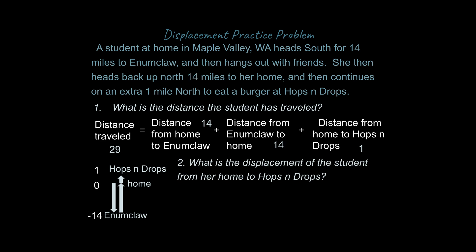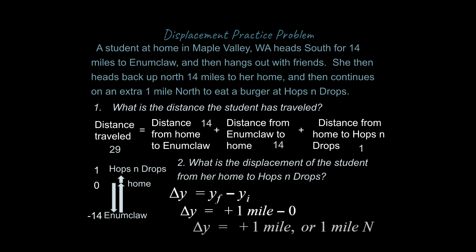Secondly, what is the displacement from her home to Hops and Drops? Her initial position was at home and her final position is at the restaurant. We're working on the y-axis so we calculate delta-y. Displacement is change in position — final location minus initial: positive one mile minus zero. So her displacement is positive one mile, or one mile north. Notice that one mile north is not the same as 29 miles — displacement and distance traveled are different.